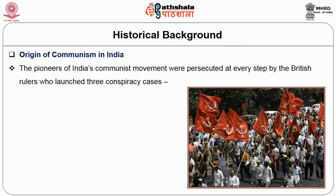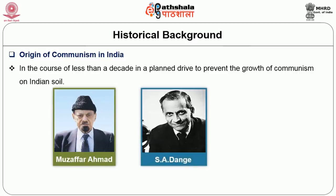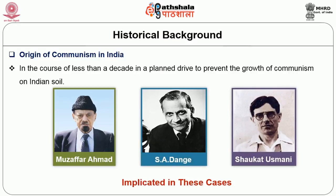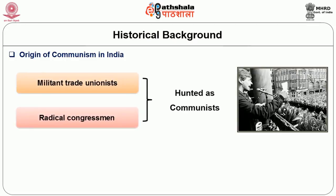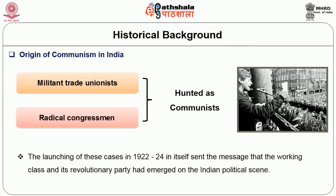The pioneers of India's communist movement were persecuted at every step by the British rulers, who launched three conspiracy cases — Peshawar, Kanpur, and Meerut — in the course of less than a decade, in a planned drive to prevent the growth of communism on Indian soil. Muzaffar Ahmad, S.A. Dang, and others were implicated in these cases. Hundreds of other militant trade unionists and radical congressmen were hunted as communists. This all-India persecution shattered the organization of the Communist Party from top to bottom, so that for full four years there was no All India Center of the Communist Party. The launching of these cases in 1922–24 sent the message that the working class and its revolutionary party had emerged on the Indian political scene.